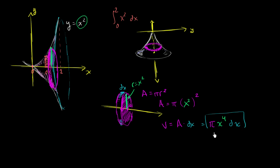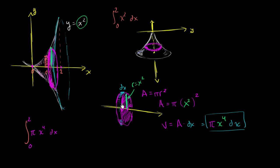This expression gave us the volume just of one of those disks, but what we want is the volume of this entire hat or bugle or trumpet-looking thing. We use the exact same technique — we take the sum of all of these things: pi times x to the fourth dx, from x equals 0 to 2. Those are the boundaries we started with. As the depths get smaller and smaller and we have more and more coins, at the limit we're actually going to get the volume of our cone or bugle. So if we just evaluate this definite integral, we have our volume.